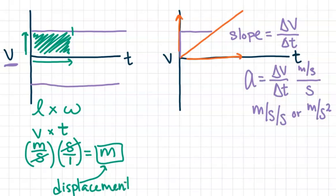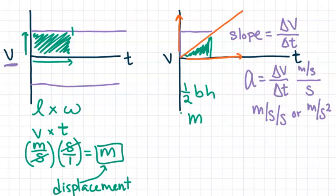We can do that with our second graph as well. The curve is a little different this time — now we're looking at a triangle — so we would find the area of that triangle using one-half base times height. We would still end up with units of meters, giving us our displacement.